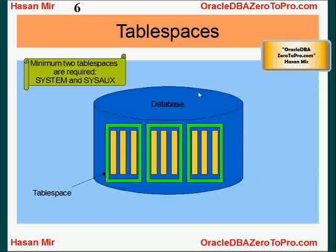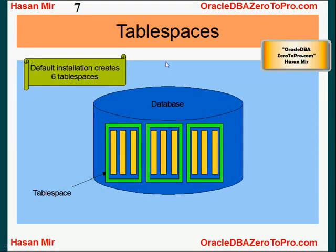When you install Oracle — this is true for 10g and onwards — a minimum of two tablespaces are required: SYSTEM and SYSAUX. However, when you do a default installation and ask the installer to create a default database for you, it creates six tablespaces.